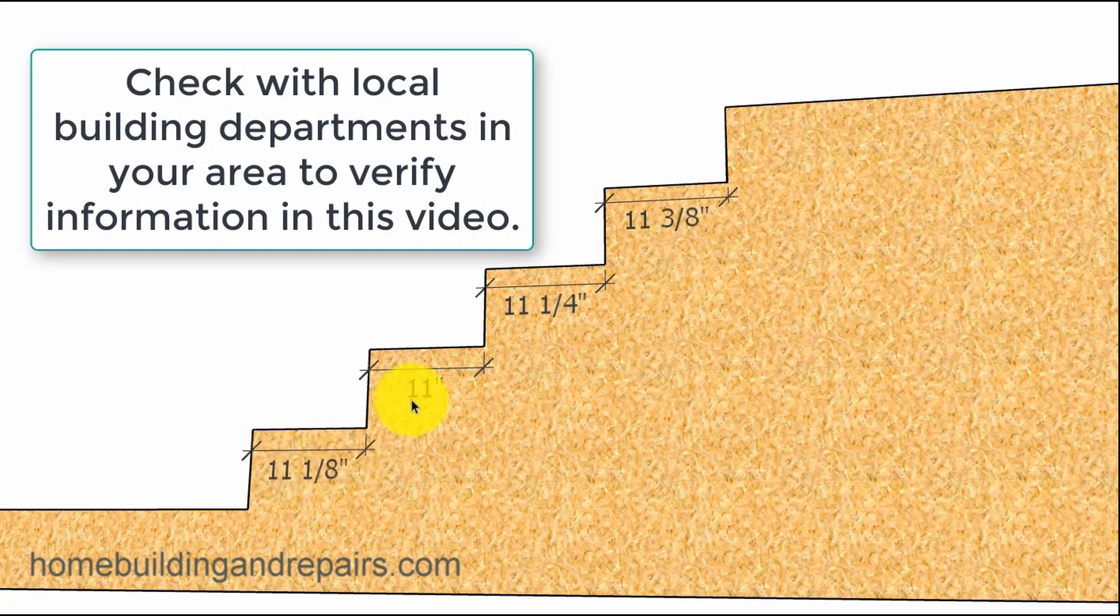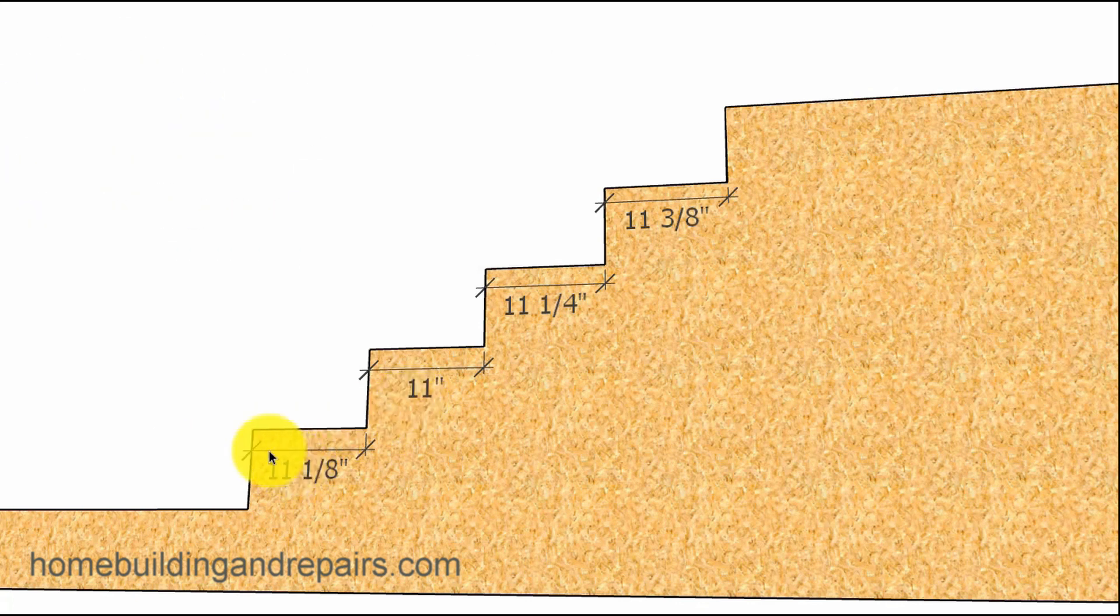They allow for a maximum of three eighths of an inch in variation, and that would be from the smallest tread to the largest tread. So here we have an 11 inch wide tread and then here we have 11 and 3 eighths. This wouldn't be a problem for the building inspector.